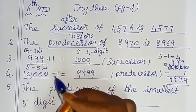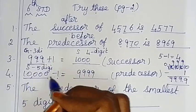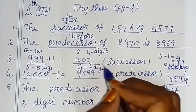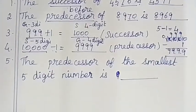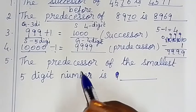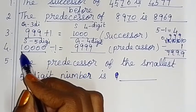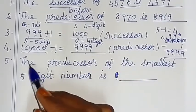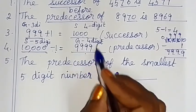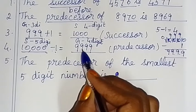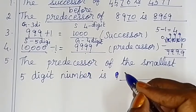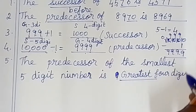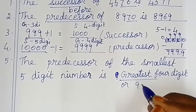The smallest 5-digit number is 10,000. So the predecessor of the smallest 5-digit number is the greatest 4-digit number, which is 9,999.